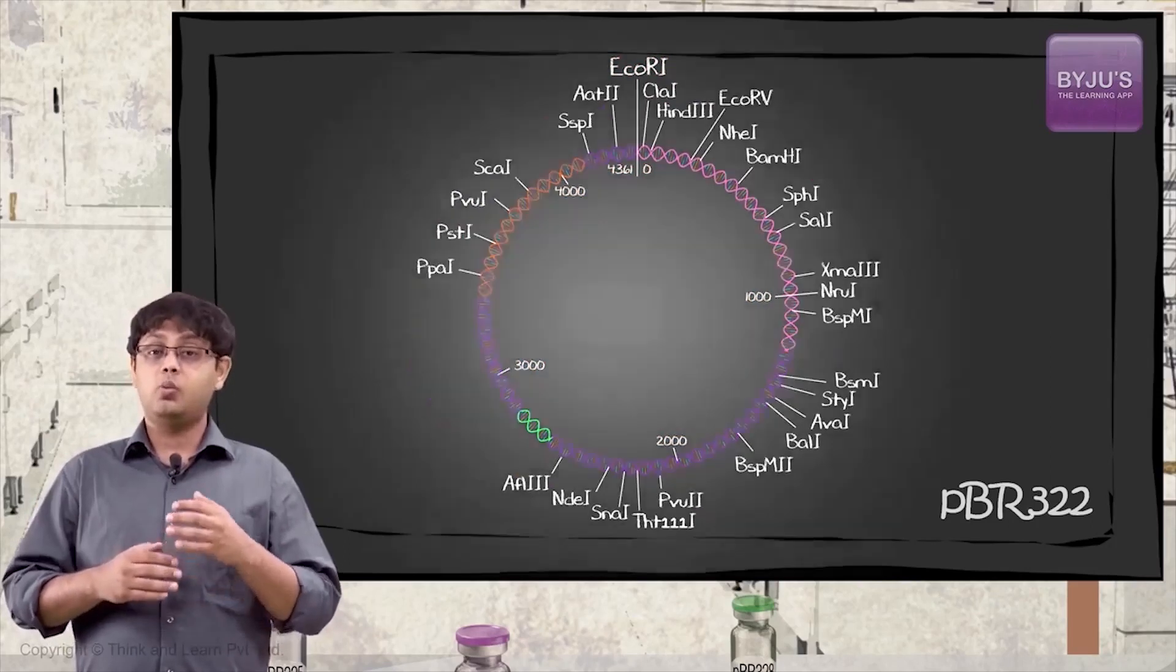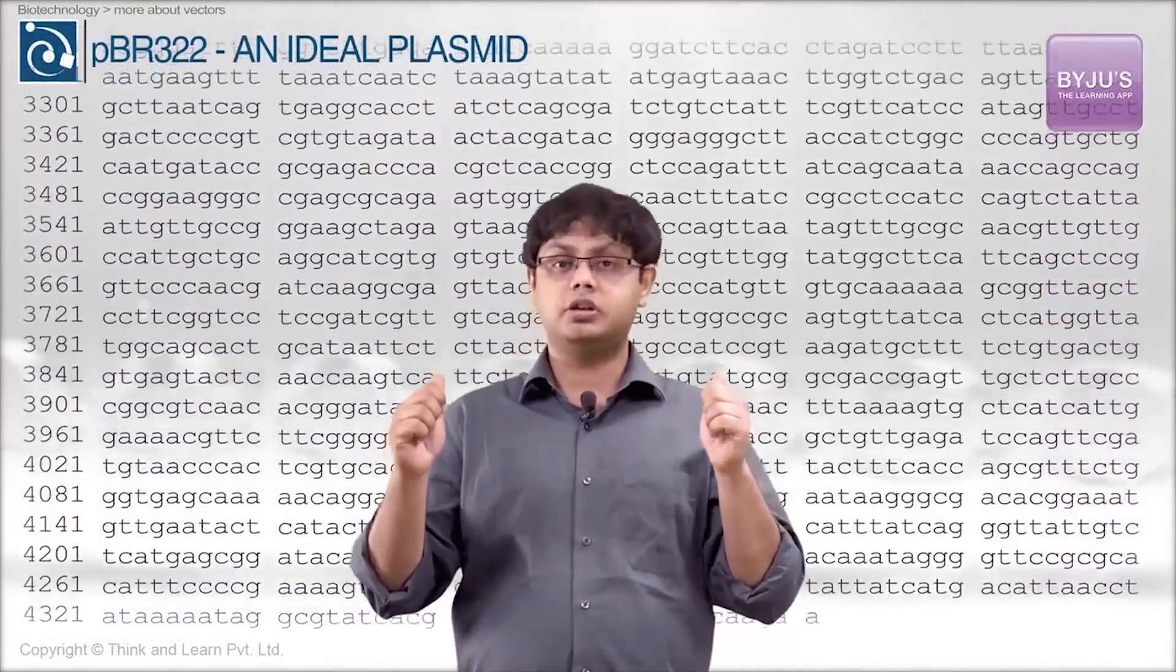What is the exact sequence? What you see behind me is the exact DNA sequence of this plasmid, and what is getting highlighted are the restriction sites in the 4,361 base pairs.